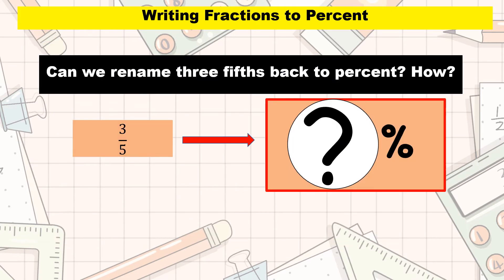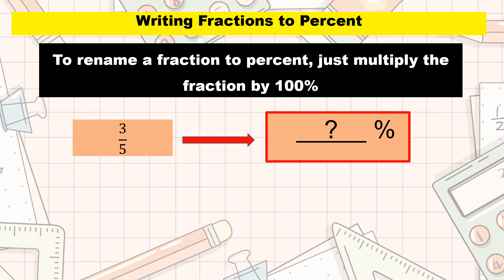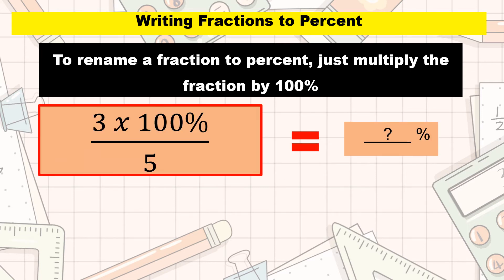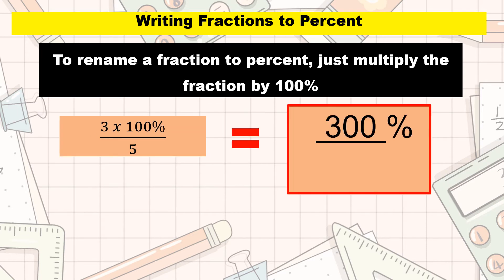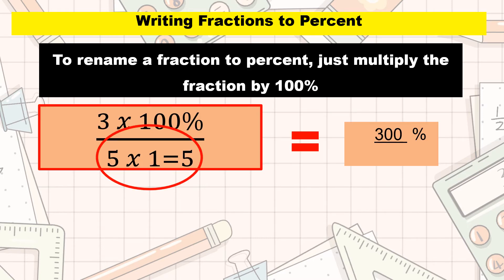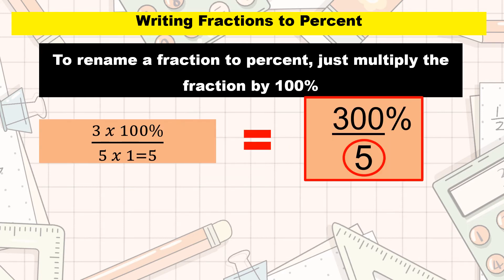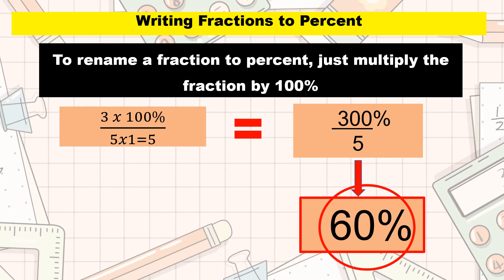Can we rename 3-fifths back to percent? How? To rename a fraction to percent, just multiply the fraction by 100%. 3 times 100% is equal to 300%. For the denominator, multiply 5 by 1, which is equal to 5. Now we divide 300% by 5, which gives us 60%. Very good.